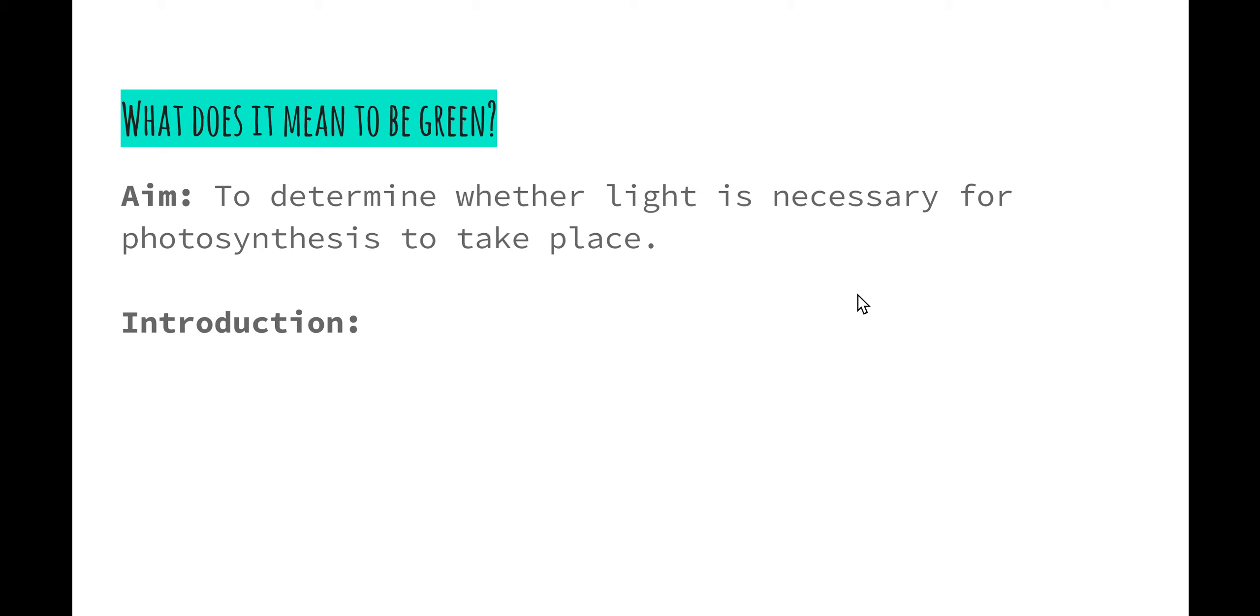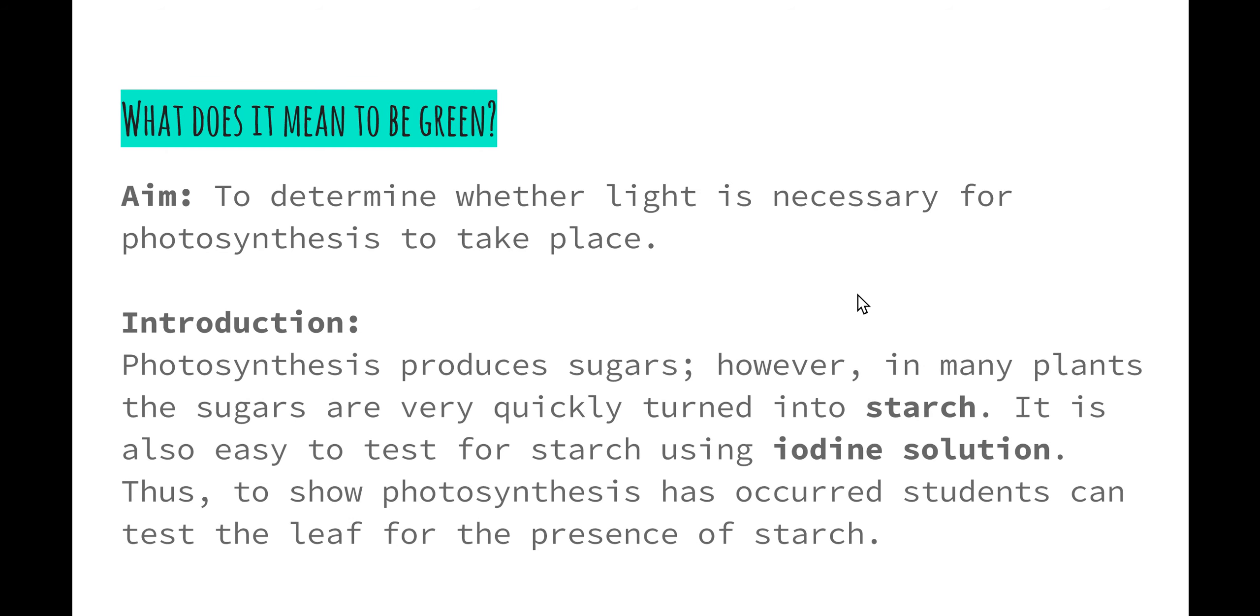As we know, photosynthesis produces sugars; however, in many plants the sugars are quickly turned into starch. Plants use some of the glucose to carry out cellular respiration to create energy, however the majority of the glucose created is converted into starch and then stored within the plants.